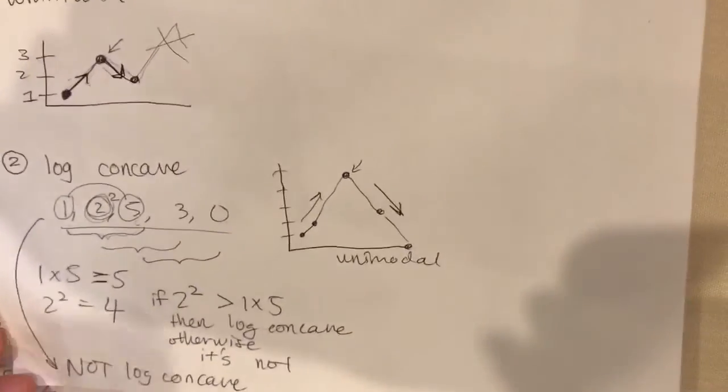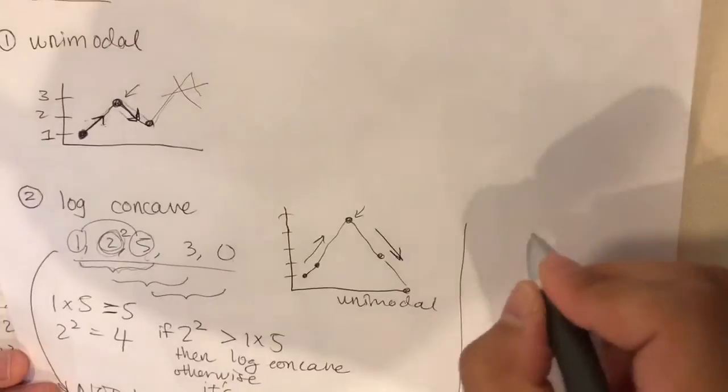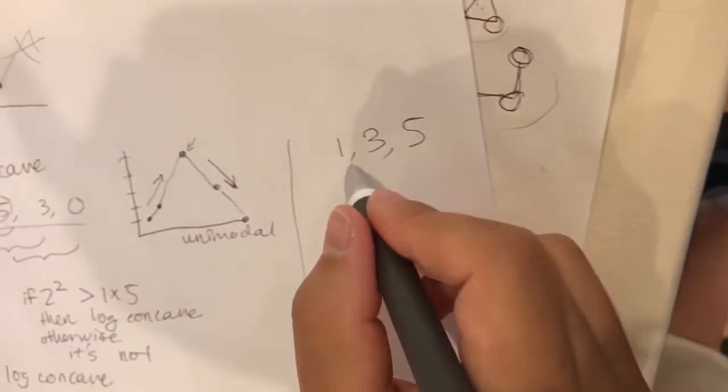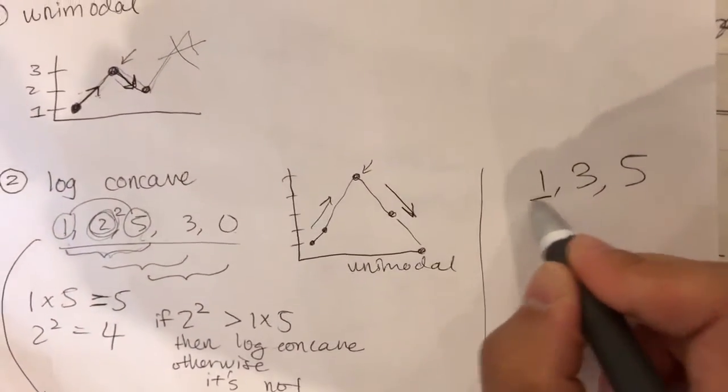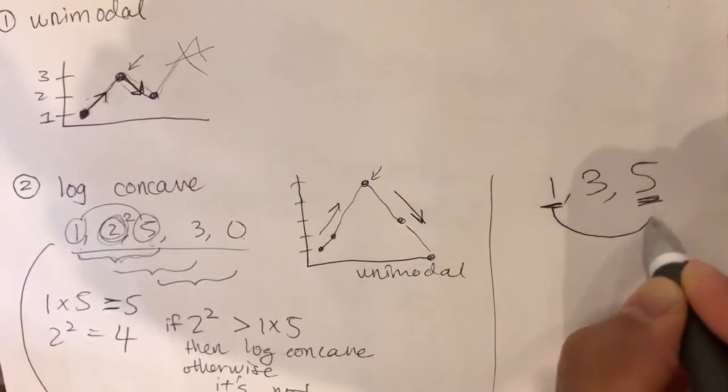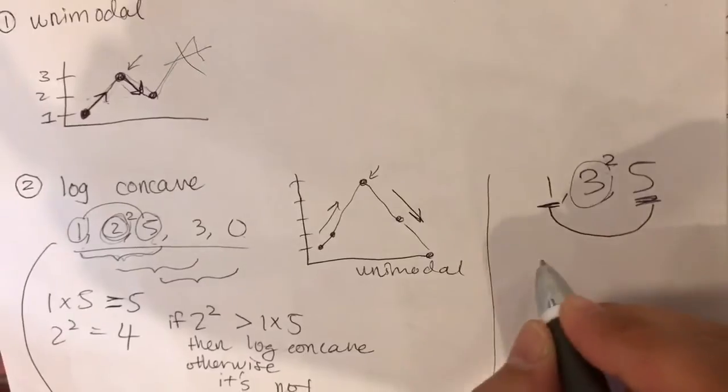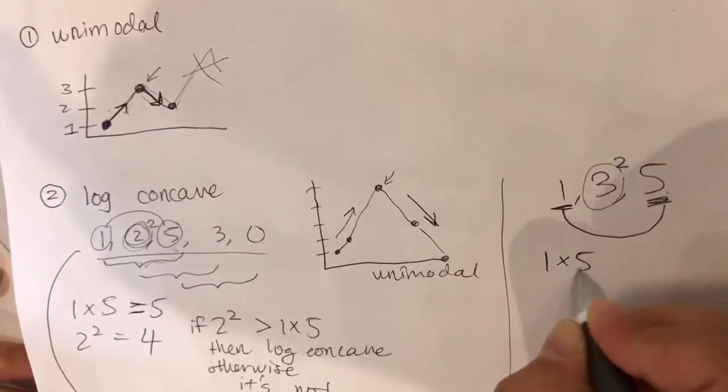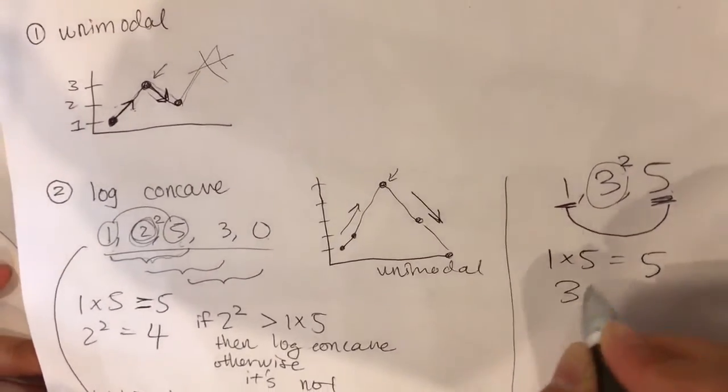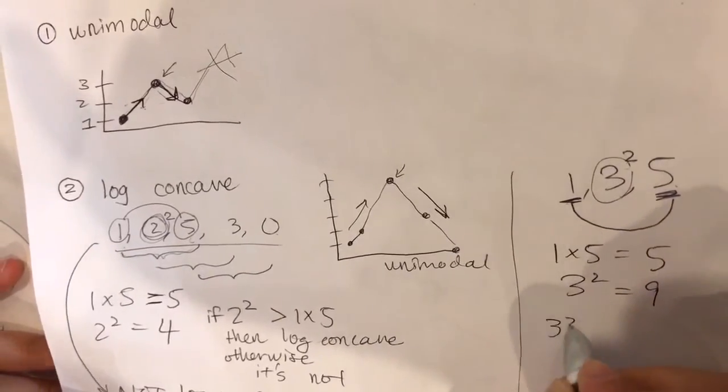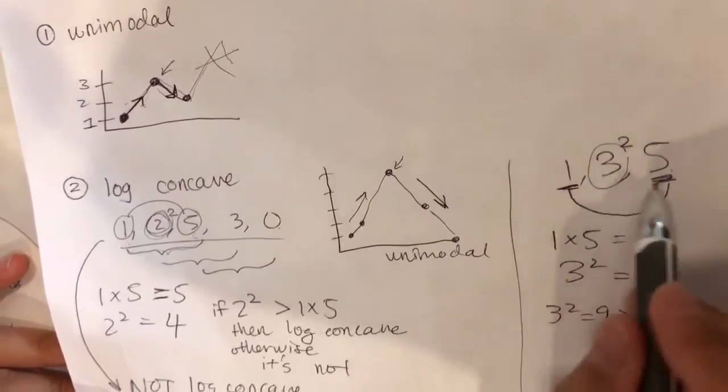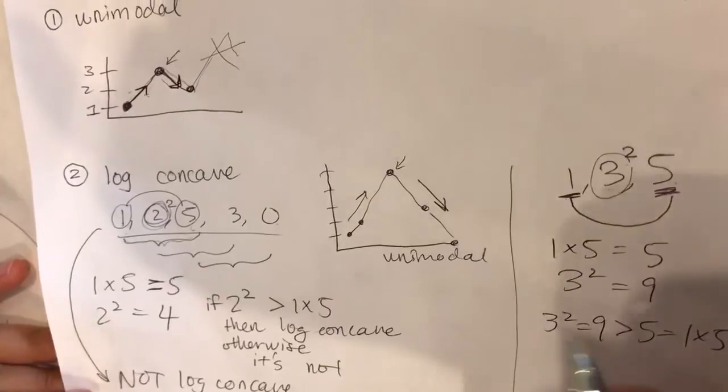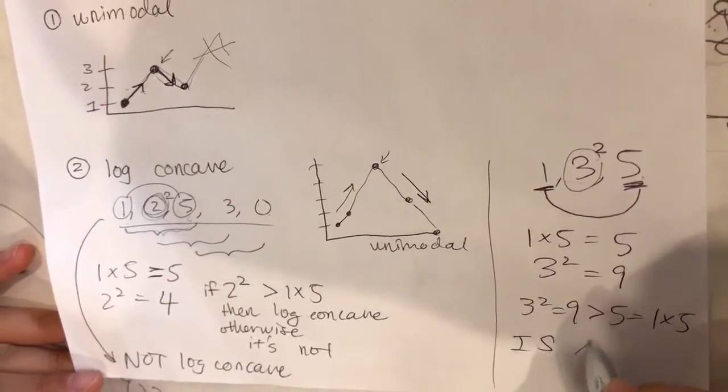But it is, however, unimodal. Now what sequence is log concave? Let's consider the sequence 1, 3, 5. We want to figure out if it's log concave or not. So we take the two outer numbers and multiply them together, and we square the middle one, and we compare these two results. 1 times 5 is 5, and 3 squared is 9. This time 3 squared is greater than 5, which equals 1 times 5. So the square of the middle number is greater than the product of the two outer numbers. In this case, this sequence is log concave.